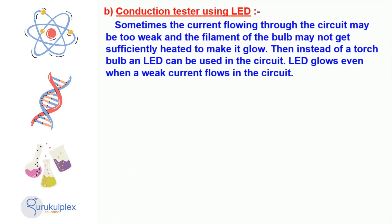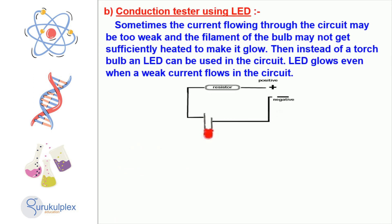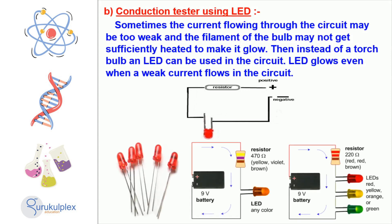LEDs, or light-emitting diodes, can be a great option for testing the conductivity of a circuit. Unlike bulbs, LEDs do not require a lot of current to work, which makes them suitable for circuits with a weak current. Additionally, LED diodes create a specific colored light depending on the type of circuit, so they can help detect many different kinds of conductivity.